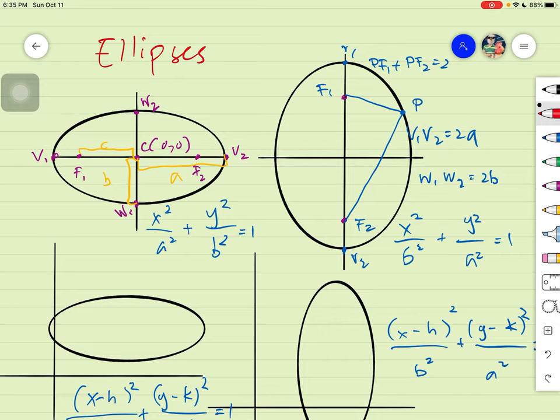And then our co-vertices is just simply b units away from our center. And lastly, we have our foci, which is c units away from our center.